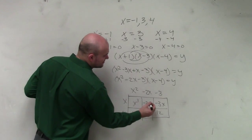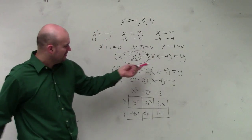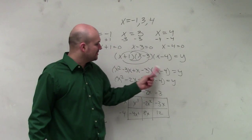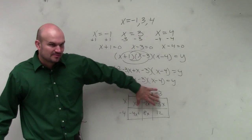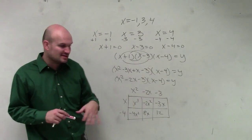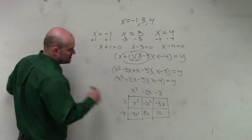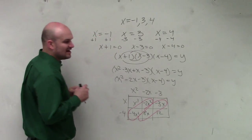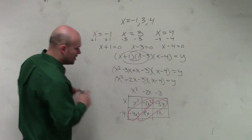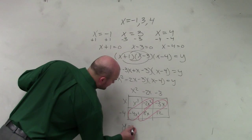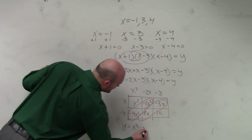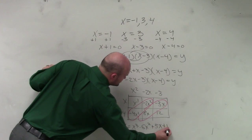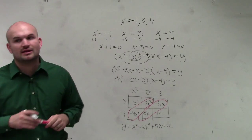What's nice about this method is when you multiply this out, numbers start getting everywhere and it gets confusing. I like this because not only does it keep it organized, but it also has your like terms on the diagonal, as long as your factors are in standard form. So when I'm writing this out, my final answer is y equals x cubed minus 6x squared plus 5x plus 12. That's your final answer.